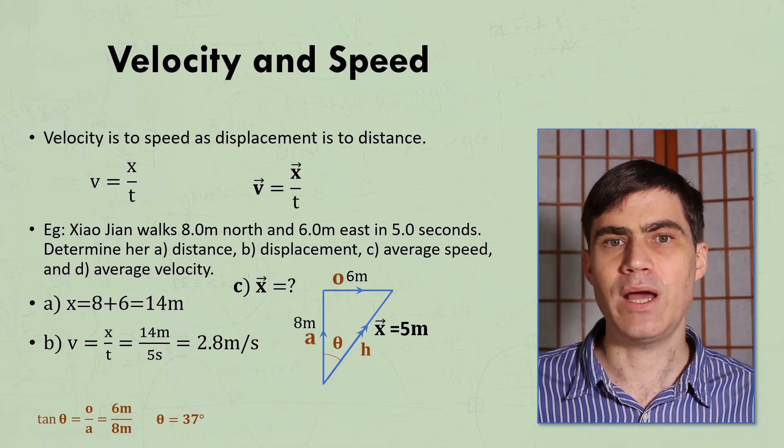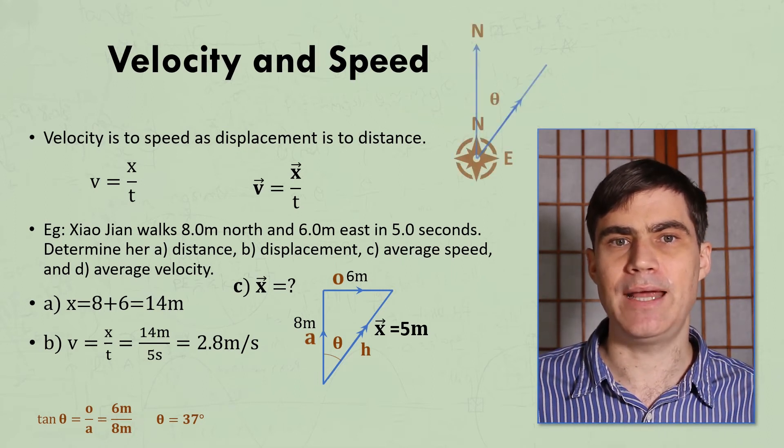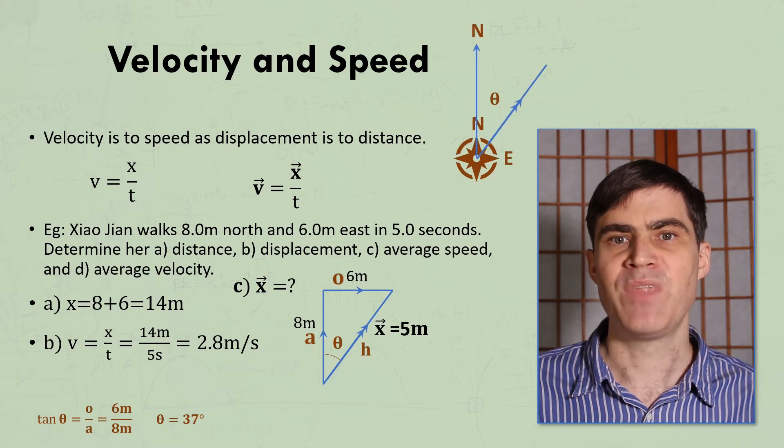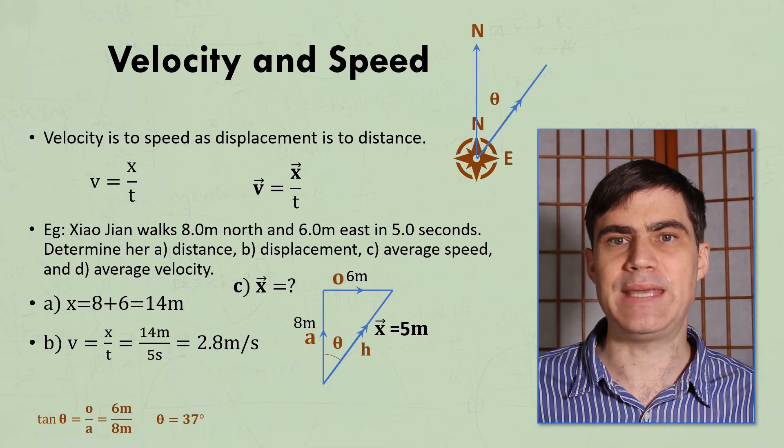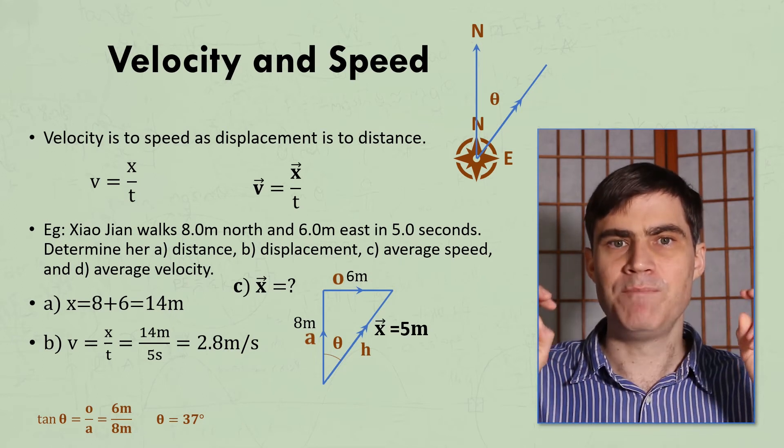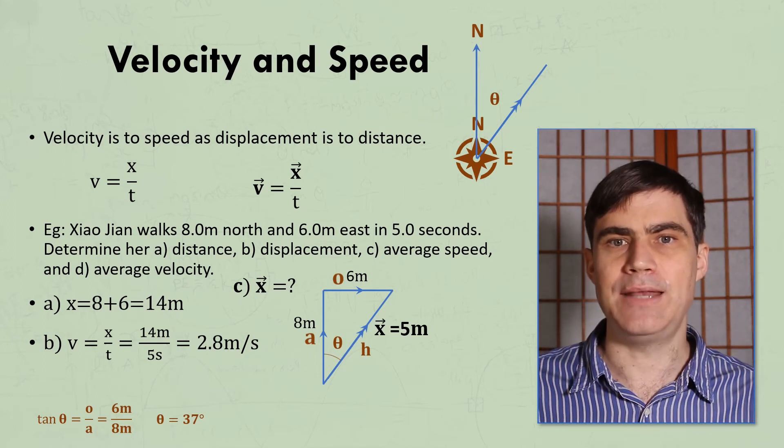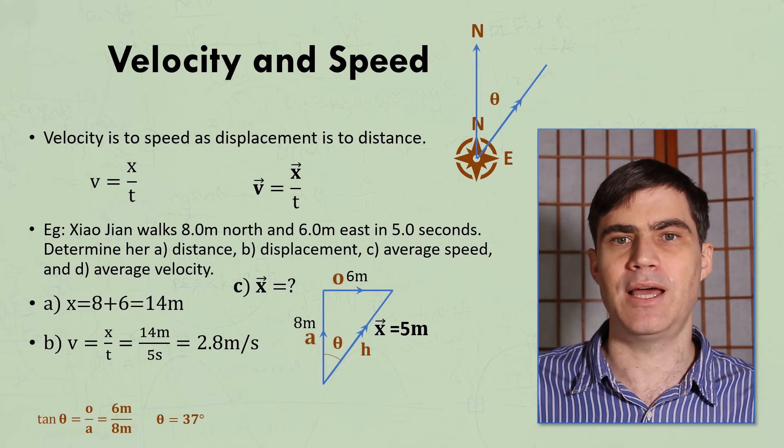There are a few ways to express this direction, but I recommend stating the angle between that direction and one of the compass directions. The most important thing is that we can't just say northeast, because we need to be more specific and use the 37 degrees we calculated.